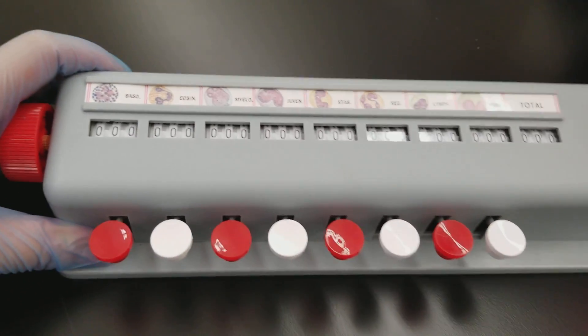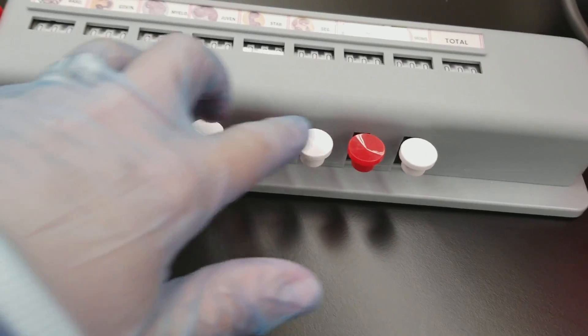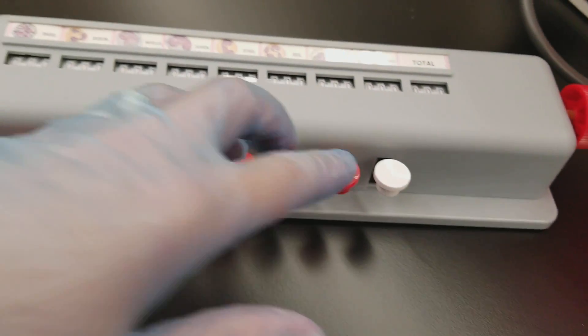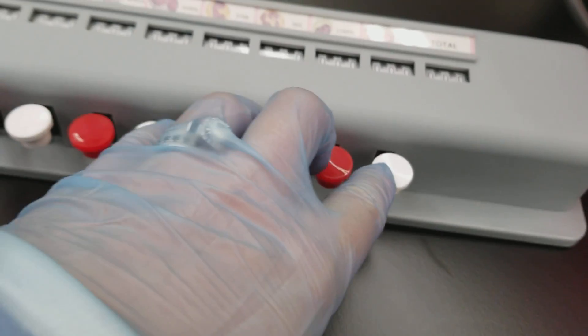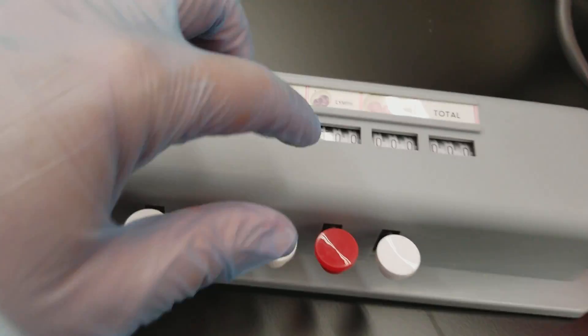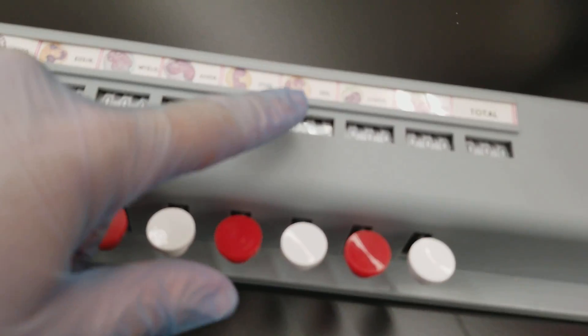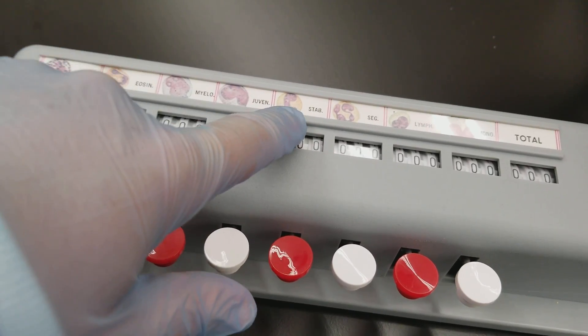So when we do this, we'll be on the microscope. Mainly you're over here because you'll see monocytes, you'll see lymphocytes, segmented neutrophils, and you'll have some bands.